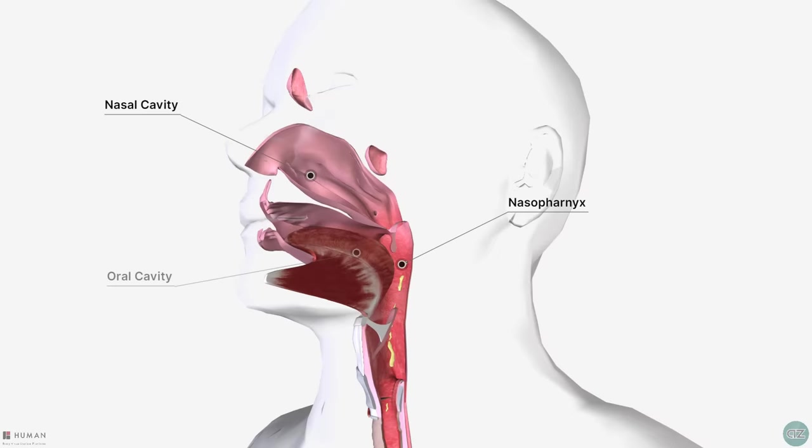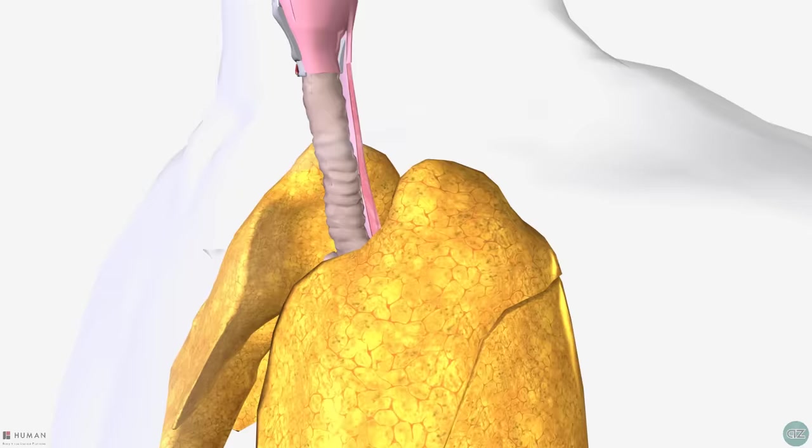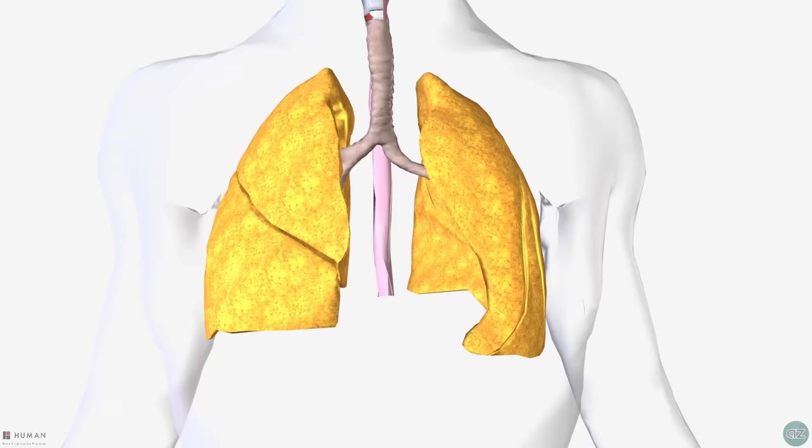Similar to SARS, SARS-CoV-2 is able to get further into our respiratory system and into our lung epithelial cells where further viral replication occurs.